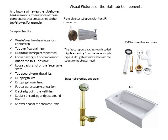Last, we will review the tub and shower. Leaks can occur from any one of these components attached to the tub and shower. For example: waste overflow drain loose joint connection, tub overflow drain leak, drain trap loose joint connection, loose packing nut or compression nut on the shut-off valve, loose packing nut on the faucet valve stem, tub spout diverter that drips, dripping faucet, dripping shower head, faucet water supply connection, cracked grout in the wall tiles, sealing or caulk gaps around the tub, and the shower door or shower curtain.